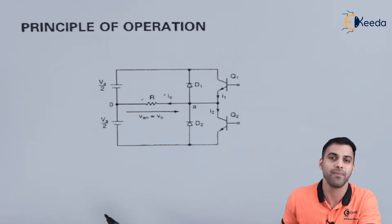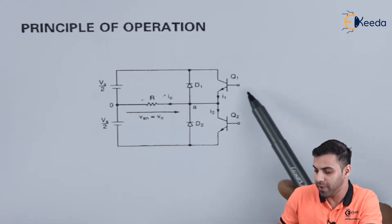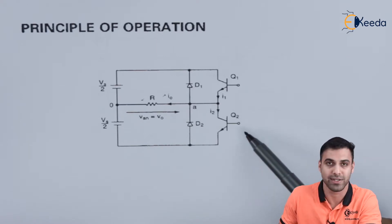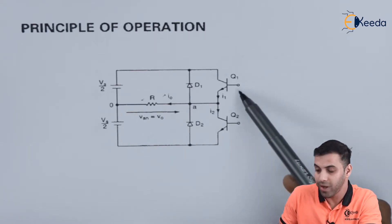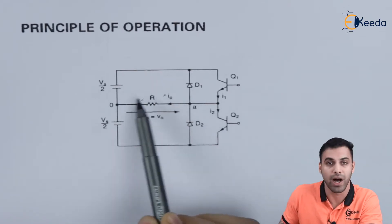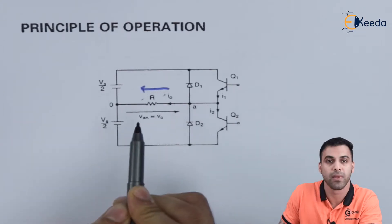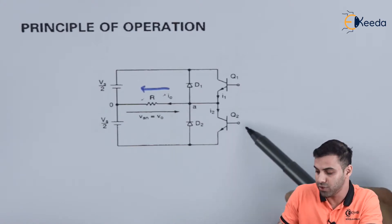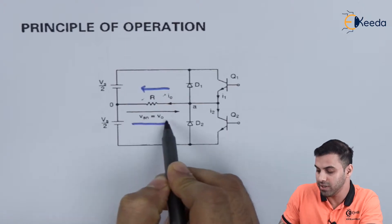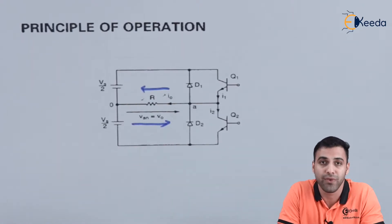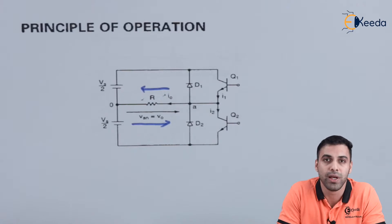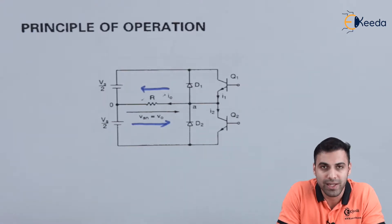Now let's convert this DC voltage to an AC voltage. If I give a gate pulse to transistor Q1 for a specific time, and after that time I apply the pulse to transistor Q2's gate terminal, then while Q1 is on, current will start flowing through resistor R in one direction. When I switch off Q1 and switch on Q2, the current will flow through the resistor in the reverse direction. This means we get two different voltages with different directions — as the direction of current changes in different time intervals depending on the switching state of the two transistors, we get inverted voltages across the resistive load.